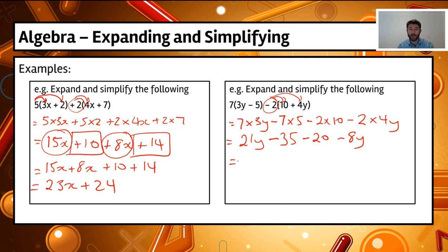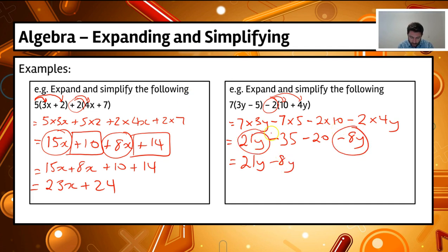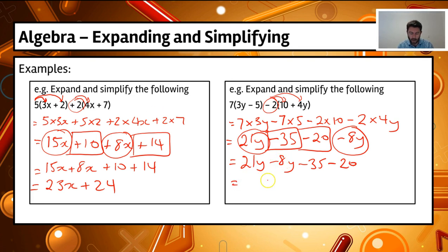Now I want to simplify by collecting like terms. So 21y minus 8y, and the constants minus 35 and minus 20. So I've got minus 35 minus 20. Adding and subtracting those like terms: 21y take 8y gives me 13y. And minus 35 minus 20 — we're starting at minus 35 and going down 20 on the number line — so we end up at minus 55.